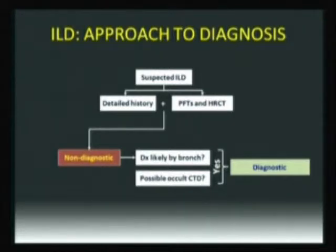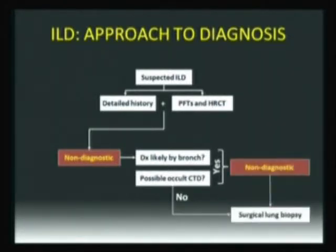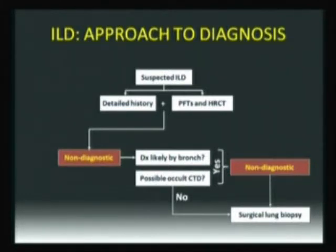Let's say that you make a diagnosis of sarcoid by transbronchial biopsy or a diagnosis of Sjögren's by serology — then you get the diagnosis. But this doesn't happen very often. In many cases you don't have a diagnosis at this stage, so you go to surgical lung biopsy. Surgical lung biopsy in ILD is not like surgical biopsy in cancer, where you have a definite answer. Surgical lung biopsy in ILD can still be questionable, with a lot of inter-observer variability among pathologists, and the technique used to sample the lung makes a difference too.